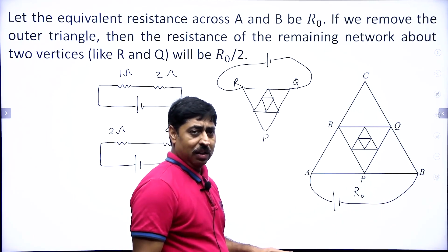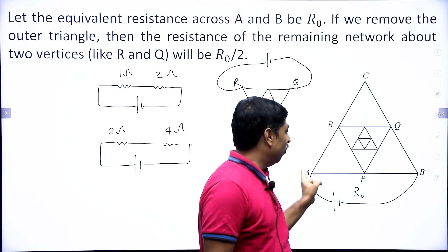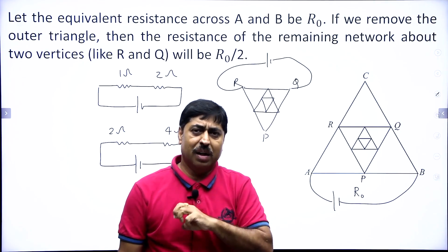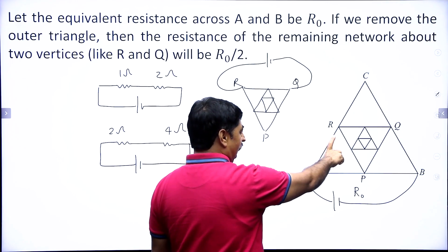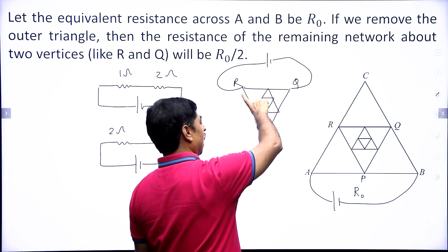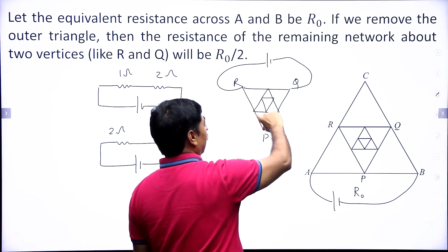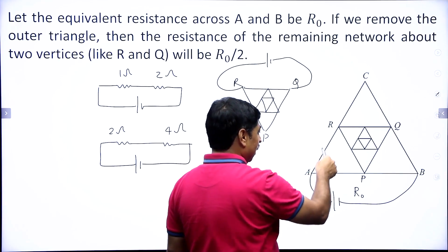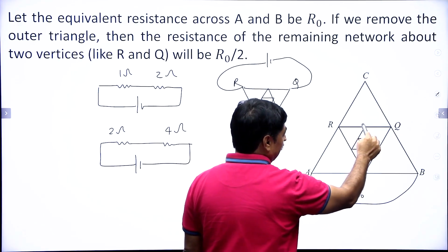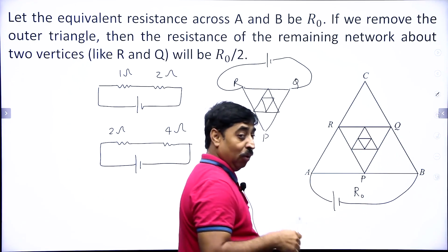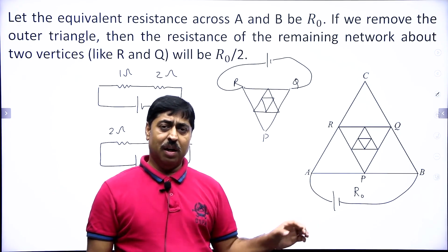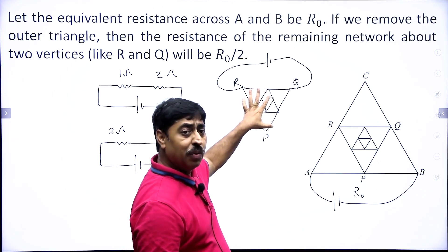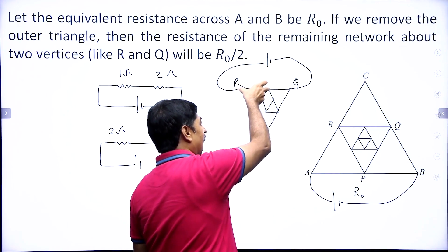So if the equivalent between A and B is R₀, and you remove the outer triangle, the circuit basically remains the same because there are infinite embedded triangles. But if resistance of one side is R, the resistance of the corresponding side in the next smaller triangle is R/2, because resistance is proportional to length and the length is halved in each successive triangle.